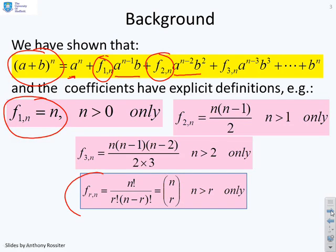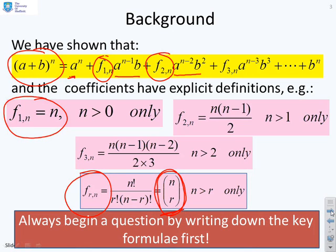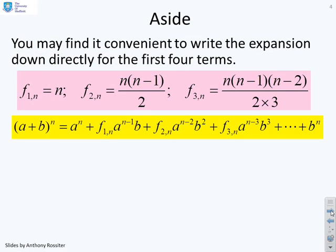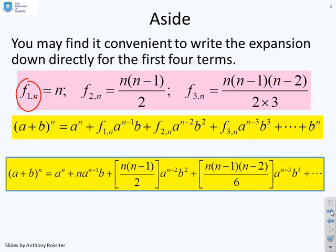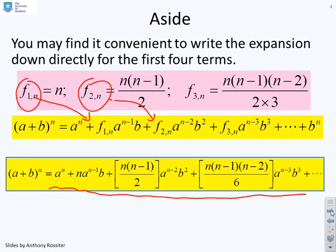You can write down a generic expression: FRN equals N factorial over R factorial times (N minus R) factorial, and there is a shorthand notation using brackets meaning the same thing. When starting a binomial expansion question, you should always have these formulas clear in your head — I'd recommend writing them down. For convenience, rather than writing all the expressions, you can substitute those coefficients straight in, depending on whether you need just the first few terms or many terms.